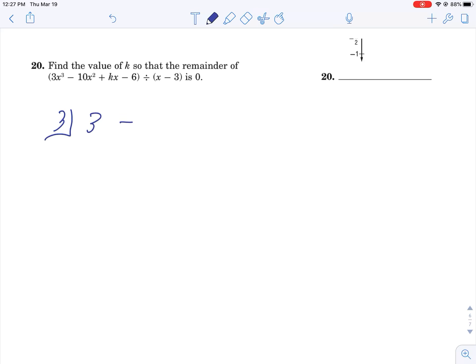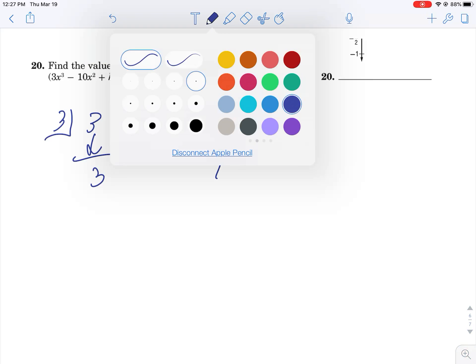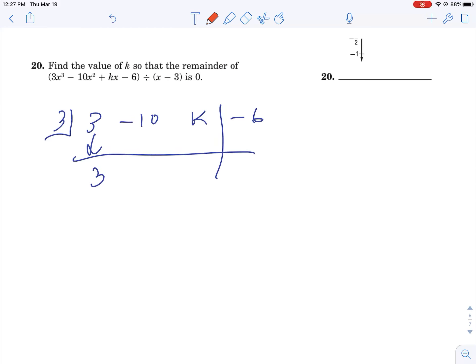I put the 3 in the corner and then 3, negative 10, k, and then minus 6. So remember, we're going to multiply, write it down. I sure didn't multiply right, sorry about that. 3 times 3 is 9. We're going to multiply, write it down, add them up, multiply, write it down, add them up. Oh gosh, that doesn't look very good.